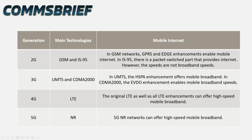In 3G, there are two technologies: UMTS and CDMA2000. In UMTS, the HSPA enhancement offers mobile broadband. In CDMA2000, the EVDO enhancement enables mobile broadband speeds. In 4G, there is only one technology — LTE — and both the original LTE and its enhancements can offer high-speed mobile broadband. Finally, in 5G, which is enabled by NR technology, 5G NR networks can enable high-speed mobile broadband.